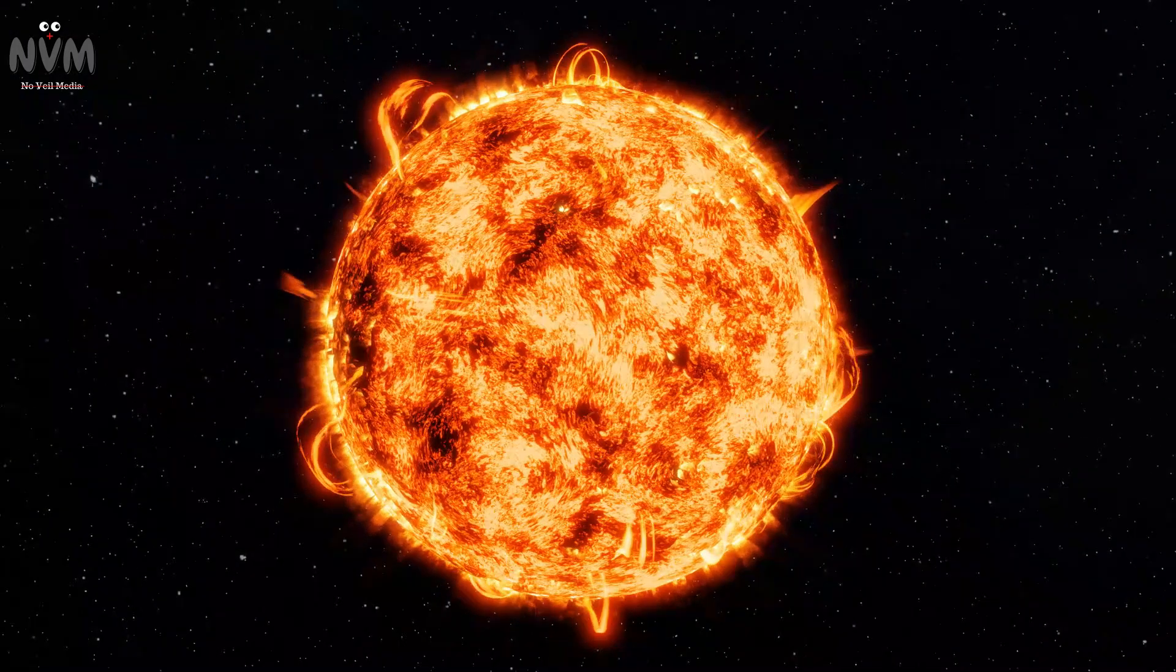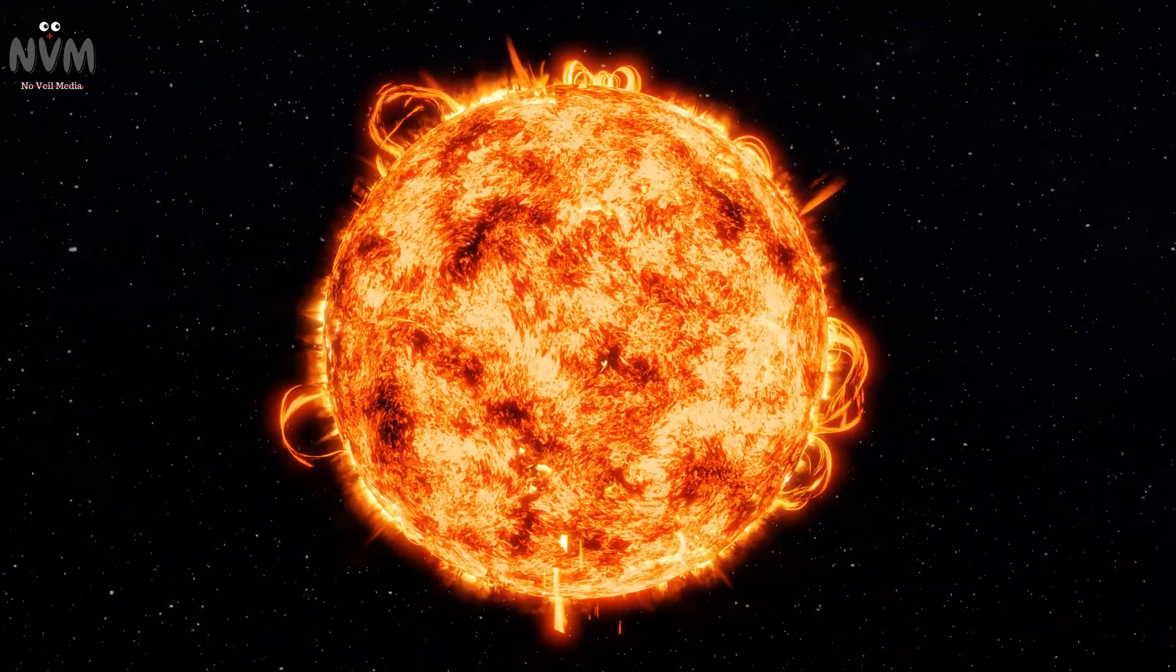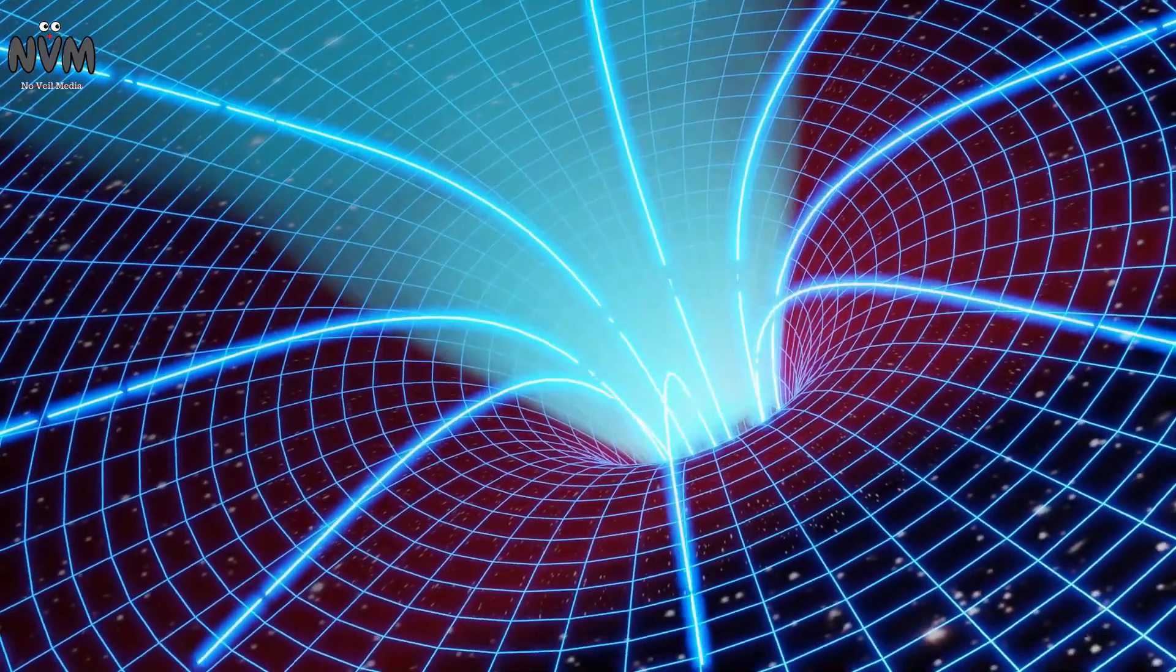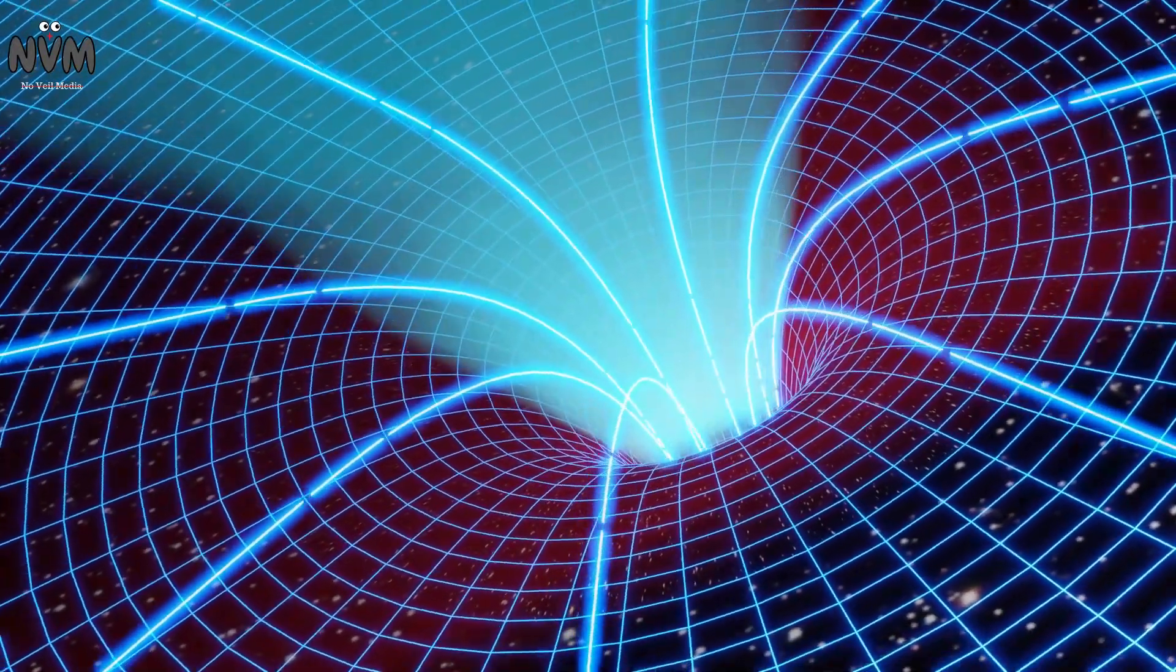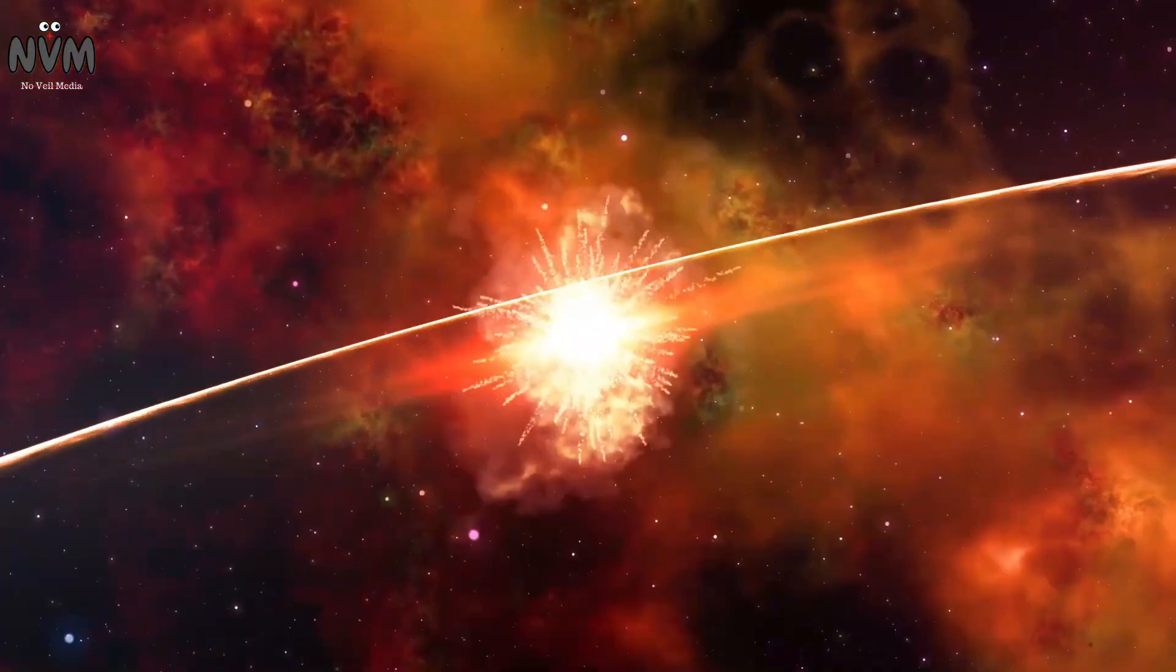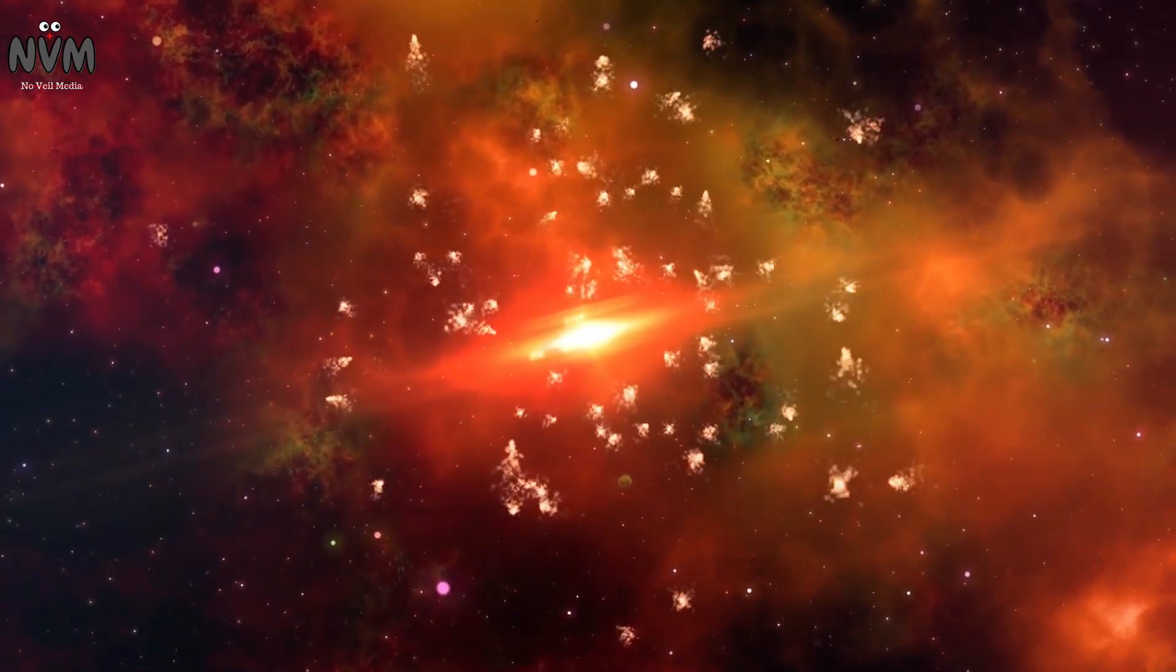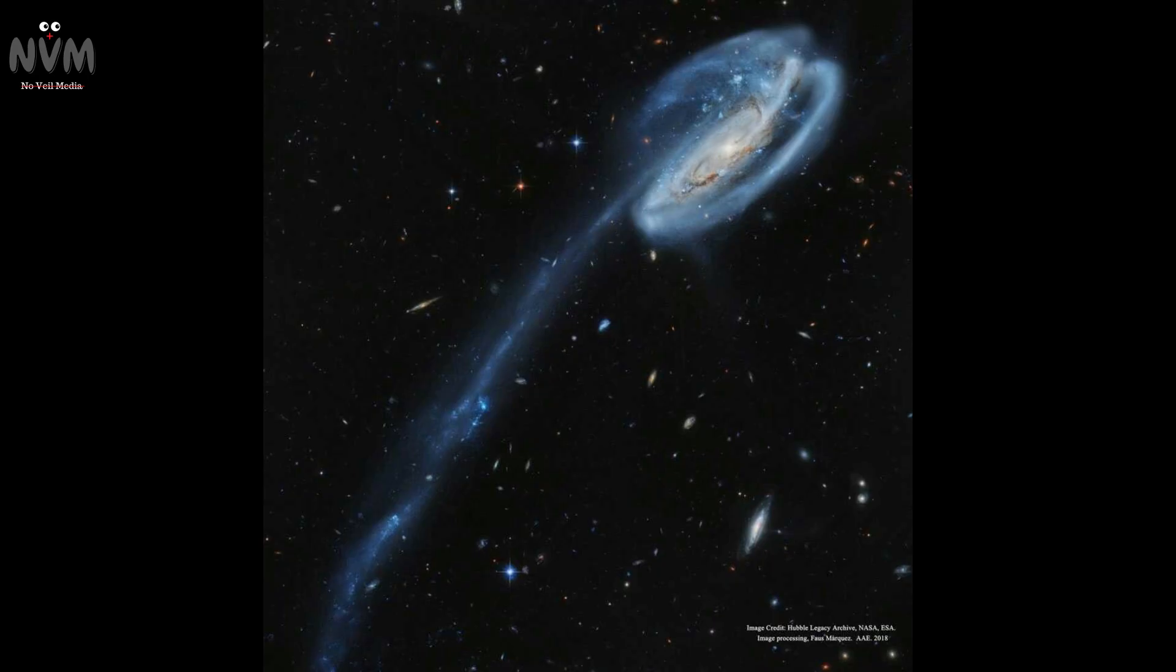Type 2 supernovae, on the other hand, happen when massive stars reach the end of their fusion cycle and collapse under their own gravity. The explosion itself is almost beyond comprehension. When a star goes supernova, an unimaginable amount of energy is released in just a matter of seconds. This explosion is so luminous it can briefly outshine entire galaxies and be viewed from the farthest reaches of space.